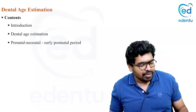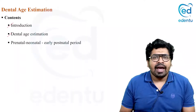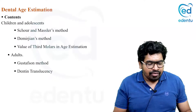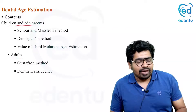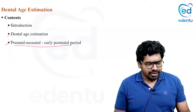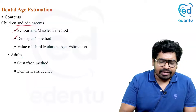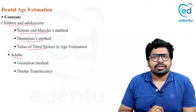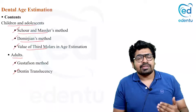Starting with the table of contents: we begin with an introduction to dental age estimation, then cover dental age estimation for each age group. For the prenatal, neonatal, and early postnatal period we use one method. For children and adolescents we use the Schour and Massler method, the Demirjian method, and the third molar method. For adults we use the Gustafson method and the dentin translucency method.